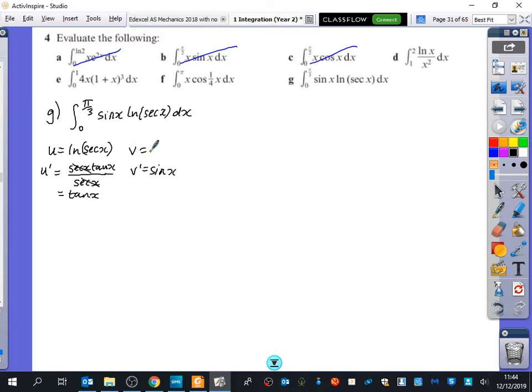What would v be equal to? Minus cos x because minus cos x integrates to sine x. So we're going to try and work out this thing that we've got here.